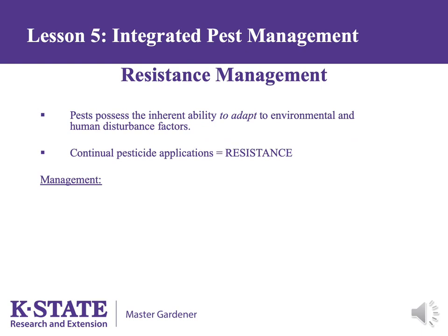Pests have the ability to adapt to environmental and human disturbance factors. Just as antibiotic resistance occurs in human diseases, the same type of thing can happen with pesticides. Using the same pesticide over and over will often cause resistance to build up so that control is diminished or ineffective. The first line of defense is judicious use of pesticides — identify the problem before you use one.